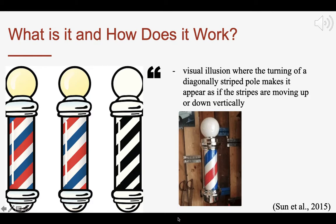The barber pole illusion is a visual illusion where the turning of a diagonally striped pole makes it appear as if the stripes are moving up or down vertically, as you can see in the GIF on the right side of the slide.